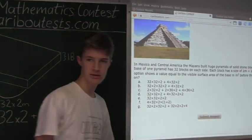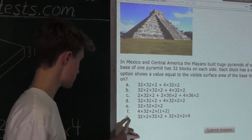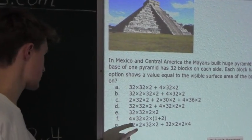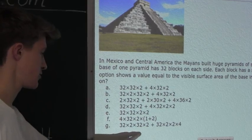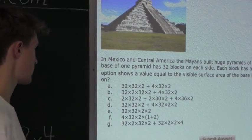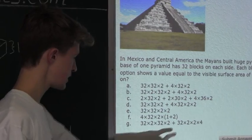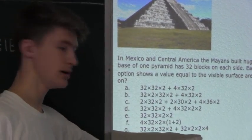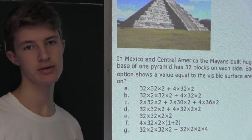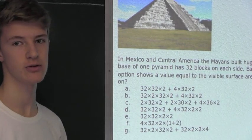So now looking at the options we can see it must be option G because of course we still have the 32 times 2 times 32 times 2 which we had for the surface area of the square base and then plus the 32 times 2 times 2 times 4 for the surface area of the 4 equal sides.